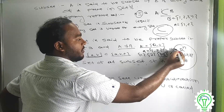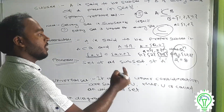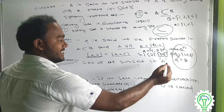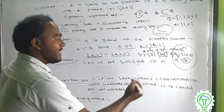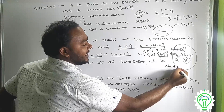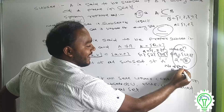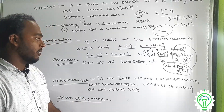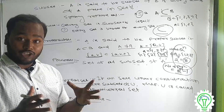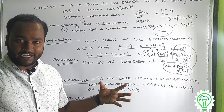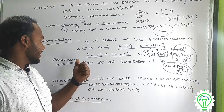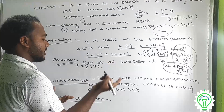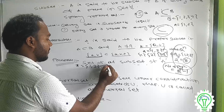The number of subsets of a set is 2 to the power n. The number of proper subsets of a set is 2 to the power n minus 1. The number of subsets is 2 to the power n.